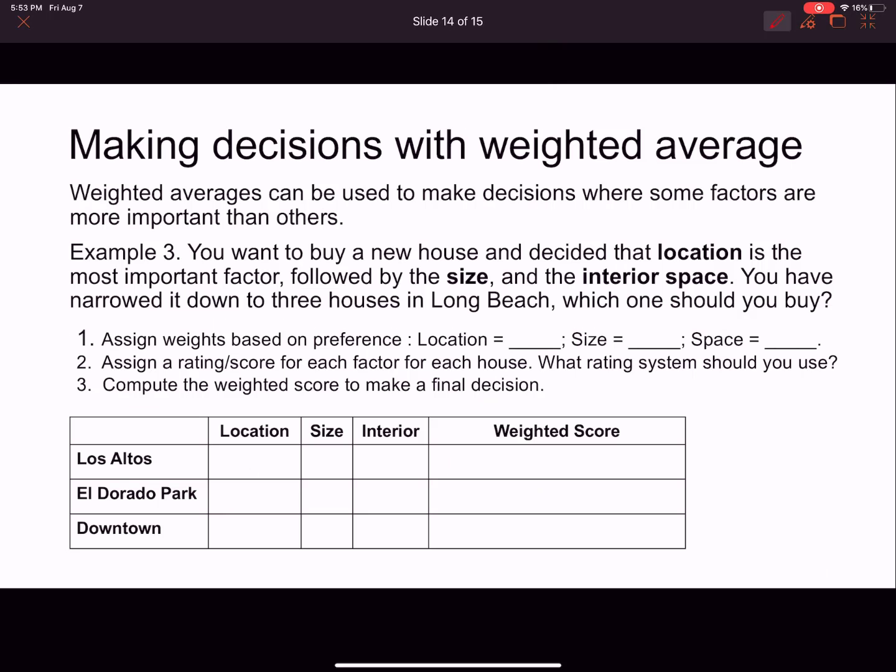How else is weighted average important? You can also be important when making decisions. Let's say you're trying to buy a house and you have three different houses. You have a house in Los Altos, you have a house in El Dorado Park, and you have a house in downtown Long Beach. And so you're trying to figure out which of these three houses you should buy. Now, we're going to assume that not every single one of these houses is perfect because you're never going to find a perfect house, but you are really torn between the three of them and you're not sure which one's the best option.